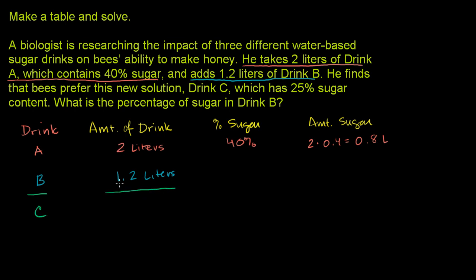And we end up with how much of Drink C? 2 plus 1.2 is 3.2 liters of Drink C, which has 25% sugar content. So this is 25% sugar. If we have 3.2 liters of it and it's 25% sugar, or one fourth sugar, that means we have 0.8 liters of sugar. It's 25% sugar, we have 3.2 liters of it.